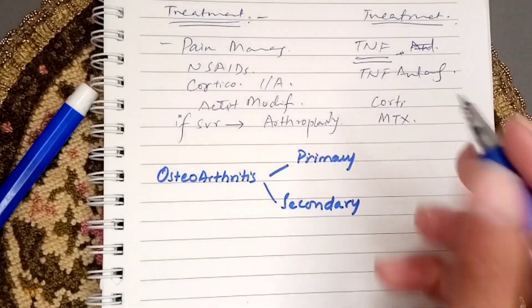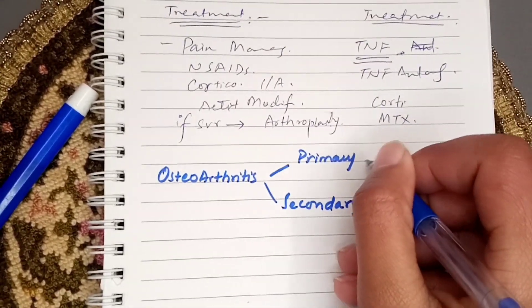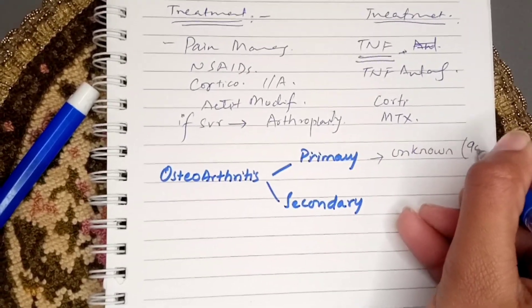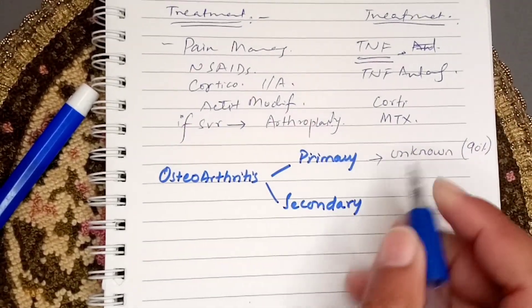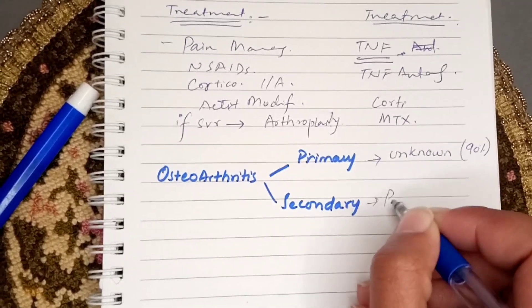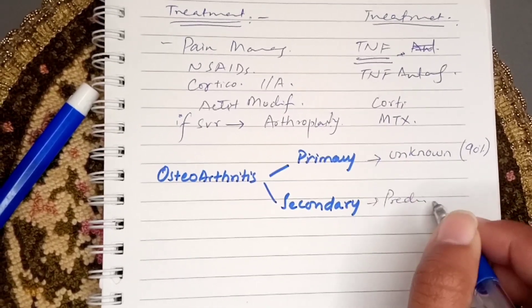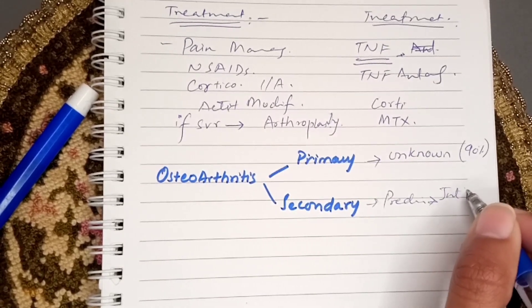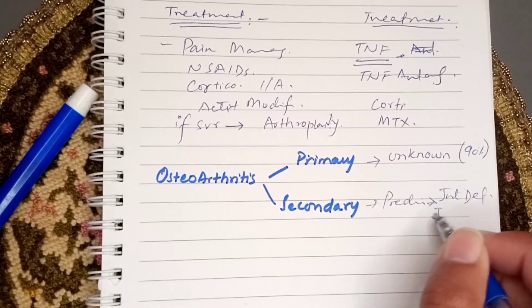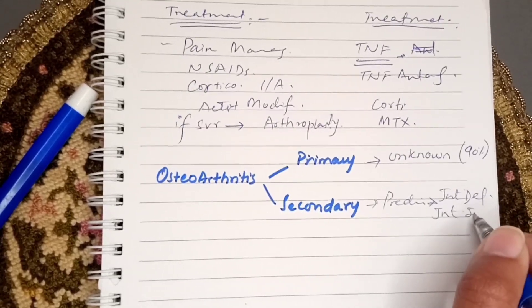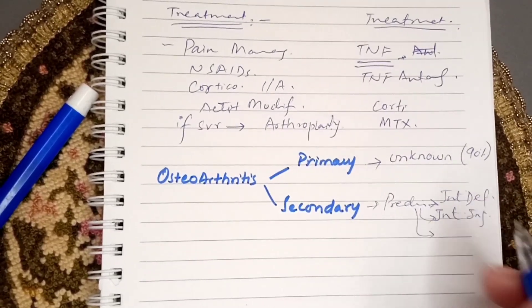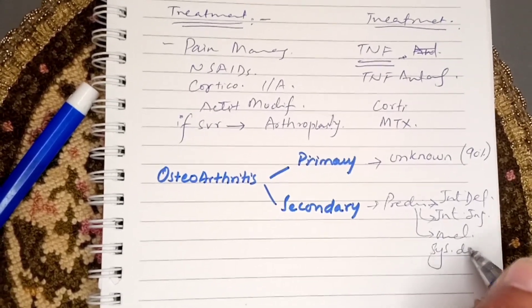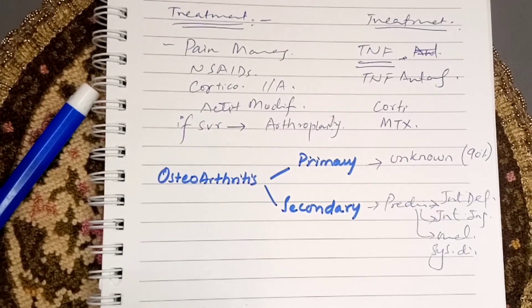There are two types of osteoarthritis: primary and secondary. Primary osteoarthritis is of unknown cause and accounts for 90% of cases. Secondary osteoarthritis has predisposing conditions such as joint deformity, previous joint injury, or an underlying systemic disease.